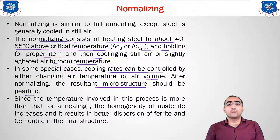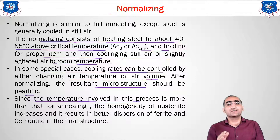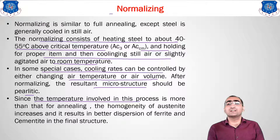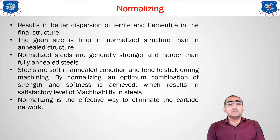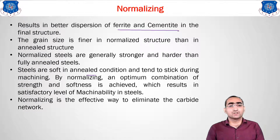Annealing gives coarser pearlite. Since the temperature involved in normalizing is higher than in annealing, the homogeneity — meaning structural uniformity of the same region — will be more. The ferrite and cementite structure will disappear, and as a result we get a finer pearlitic structure. Normalizing results in better dispersion of ferrite and cementite, and we get a finer microstructure overall.